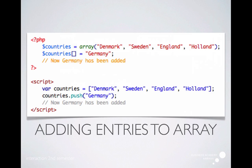If you want to add something to an array, you have to use different approaches. In PHP, it's quite easy — you just specify the variable name followed by two square brackets and then equals whatever you want to add to the list. In JavaScript, we have the array and then use the push method on the array to add something. So it's a different approach, and you have to be aware of that.